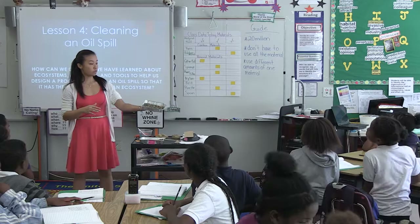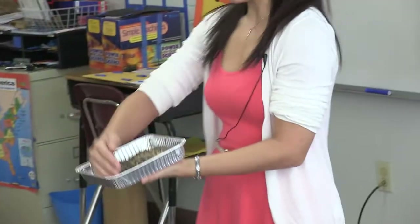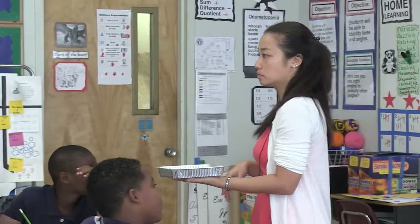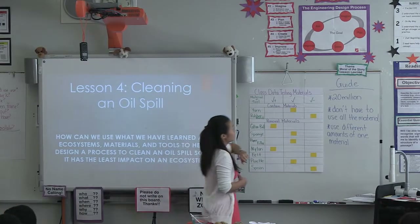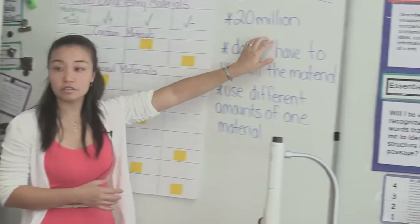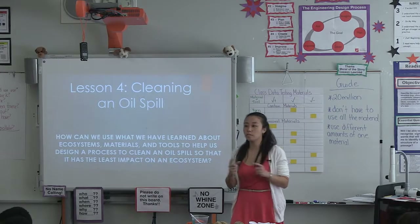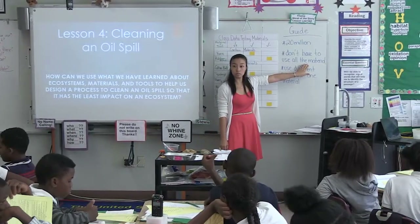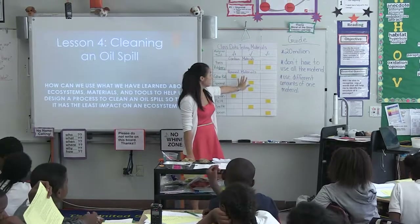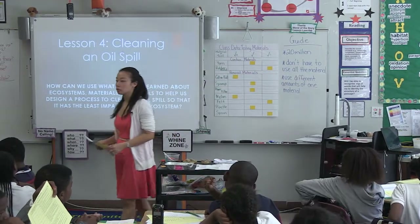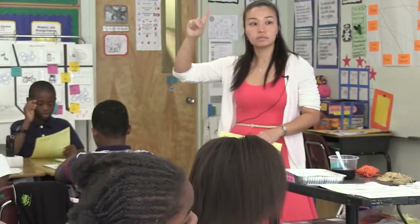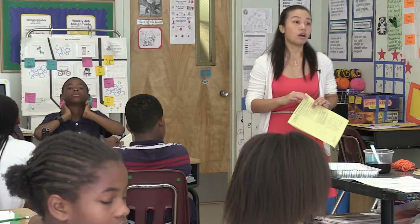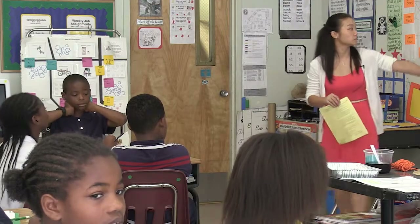You're going to get a bunch of river rocks and half the rocks will be on one side. I'll be pouring about a cup and a half of water. There's a guide for today. For today's challenge, when you're designing your process, you get $20 million to spend. You don't have to use all the material — notice how many of each object I gave you? Just one. But in this design process, you can use different amounts of one material.